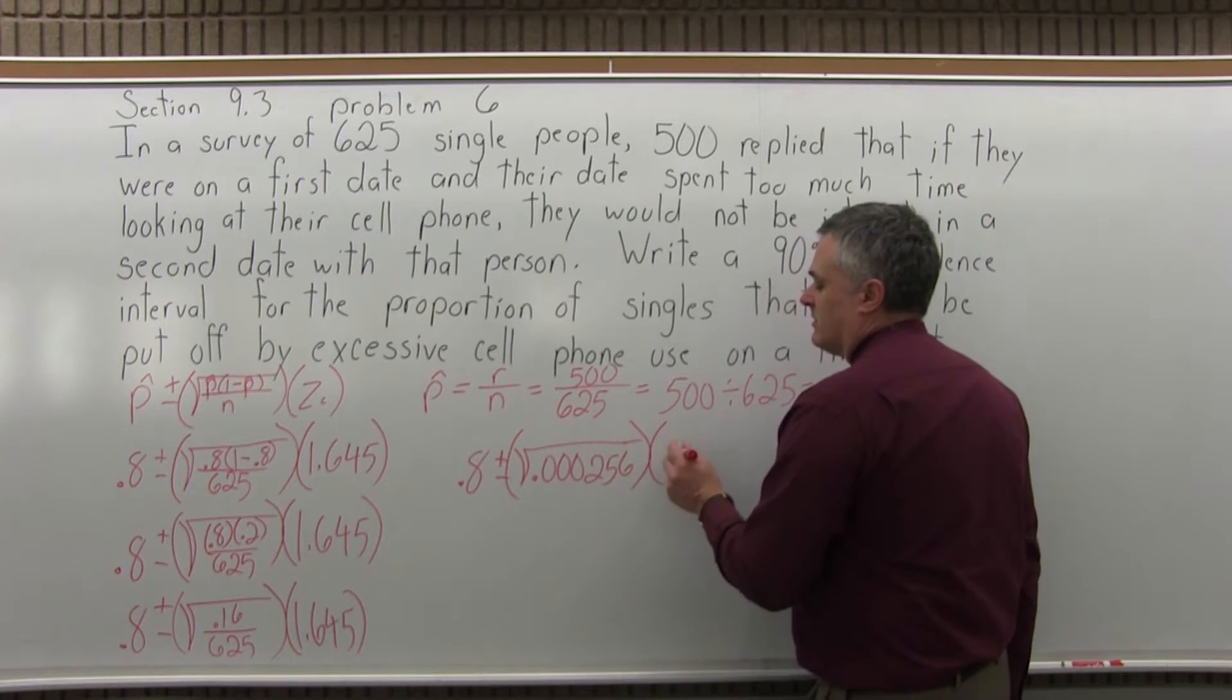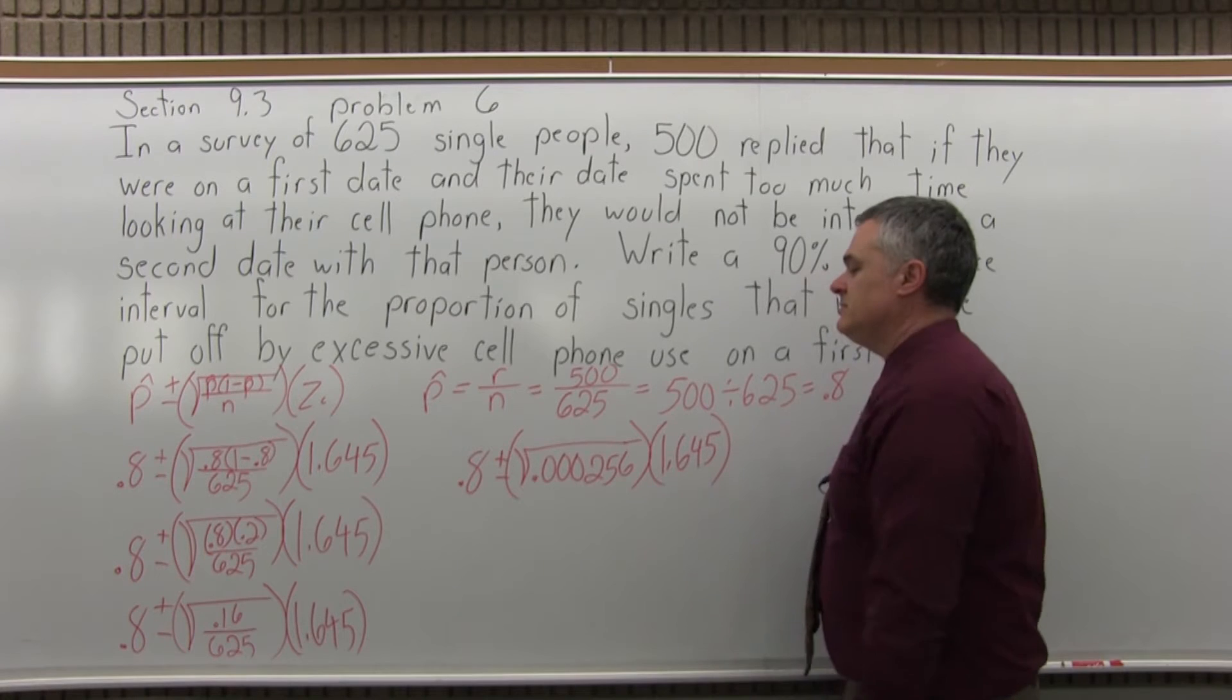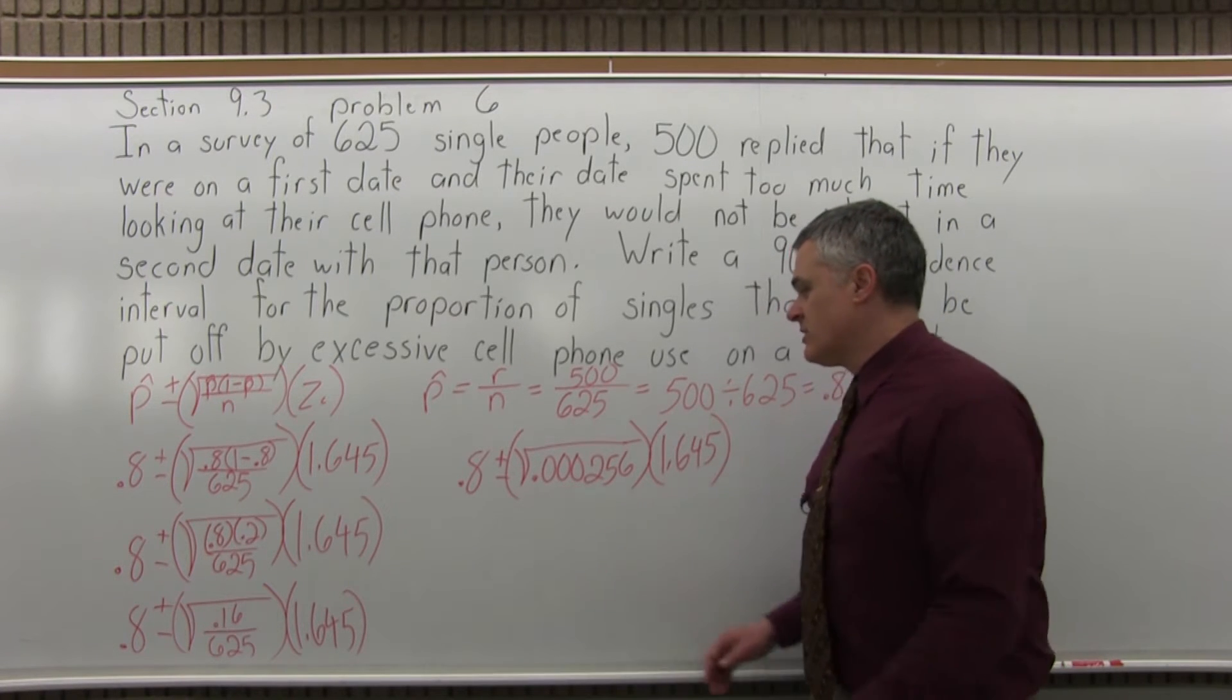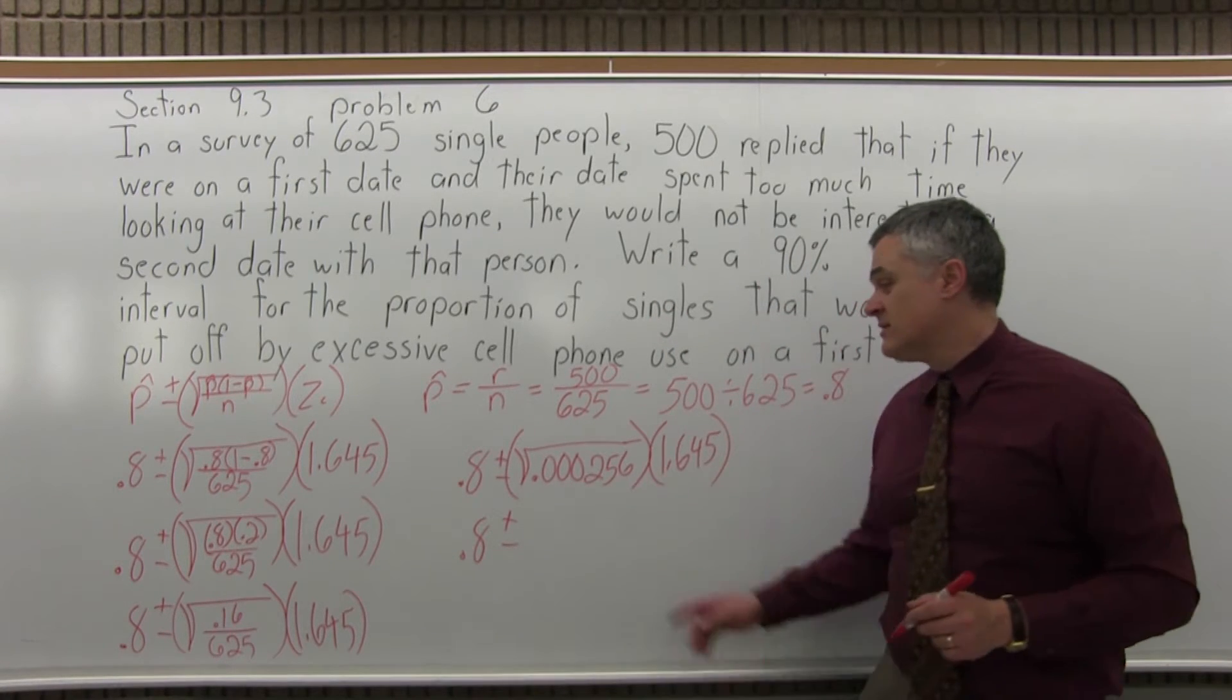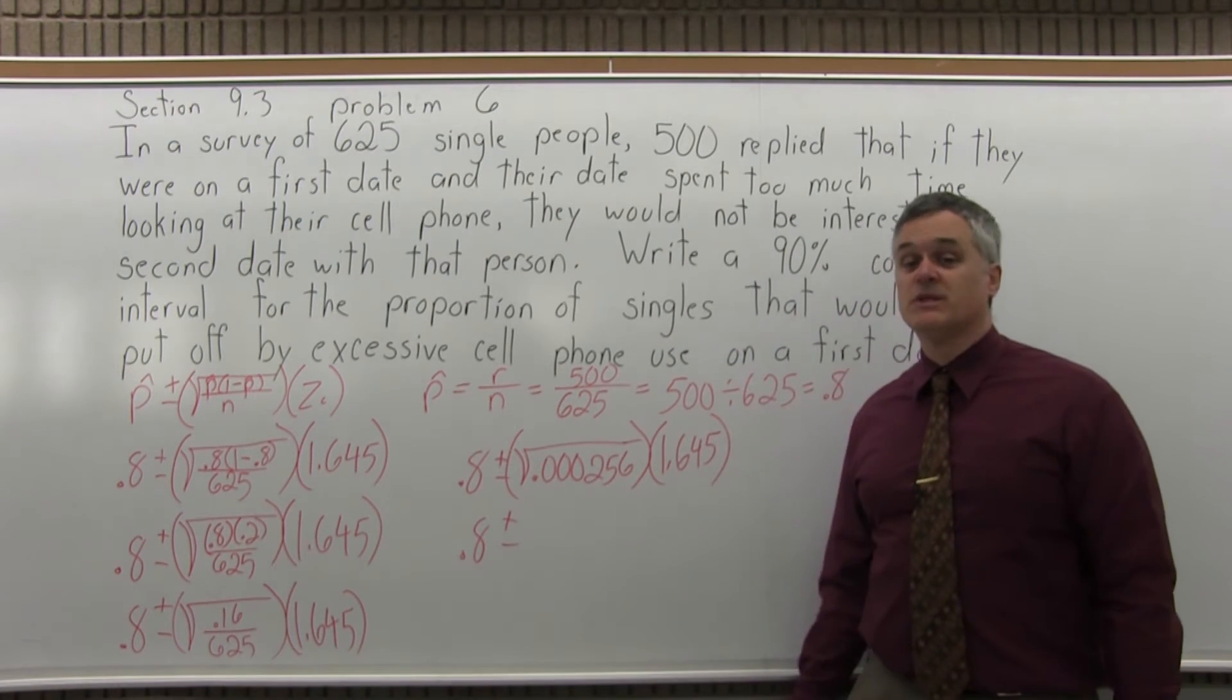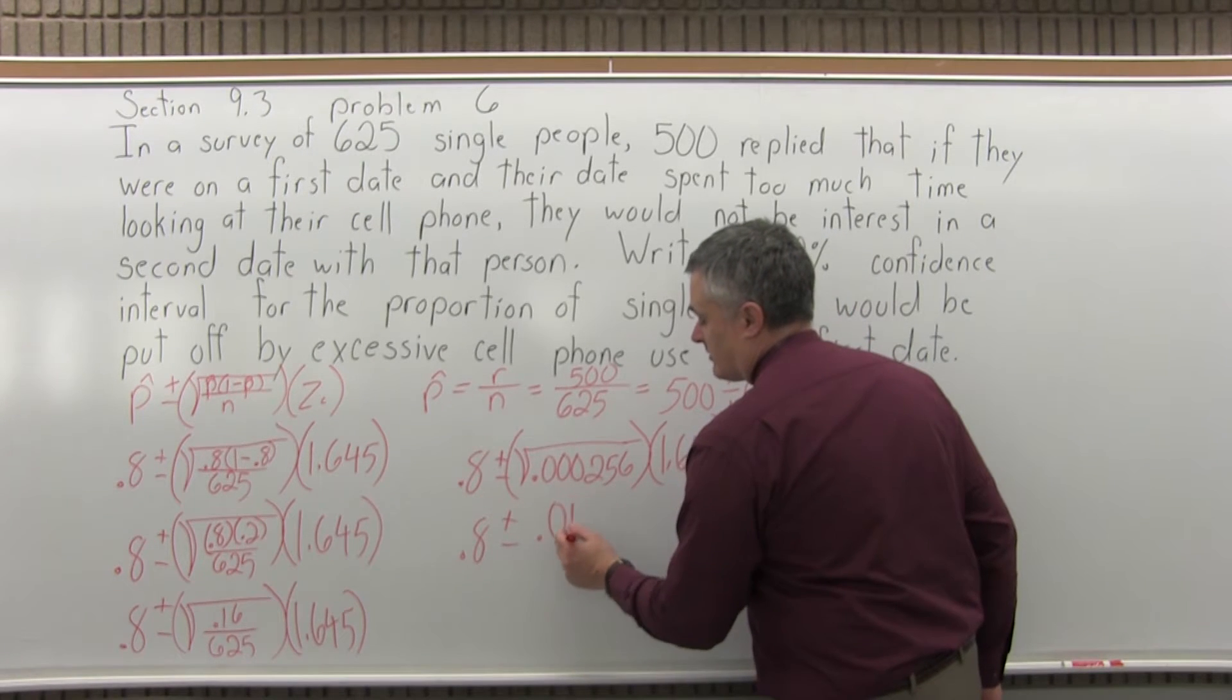So I'm going to have to do that square root. And I still have a 1.645 on the end. So now I can go ahead and do the square root. So it'll be 0.8, plus or minus the square root of 0.000256 is 0.016. So now I'm done with the square root, finally.